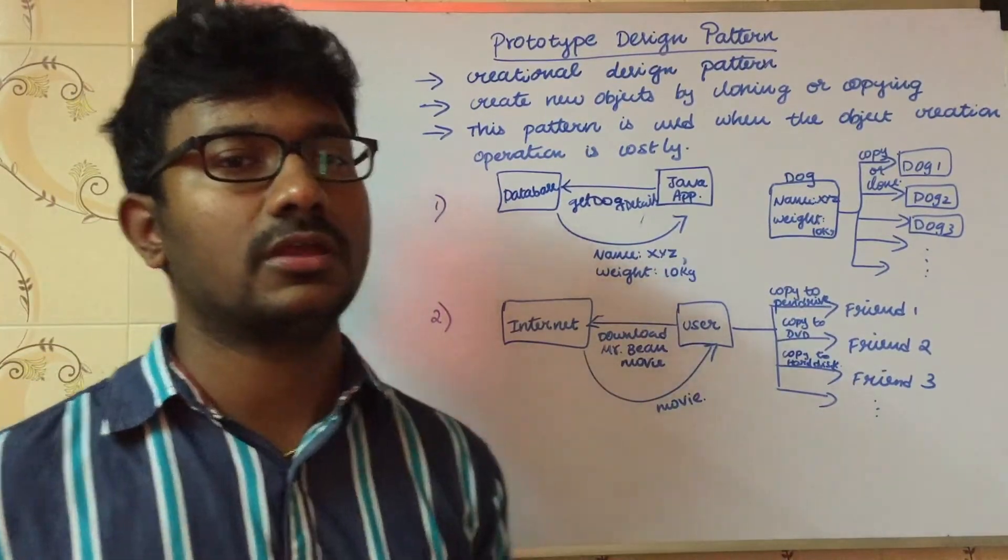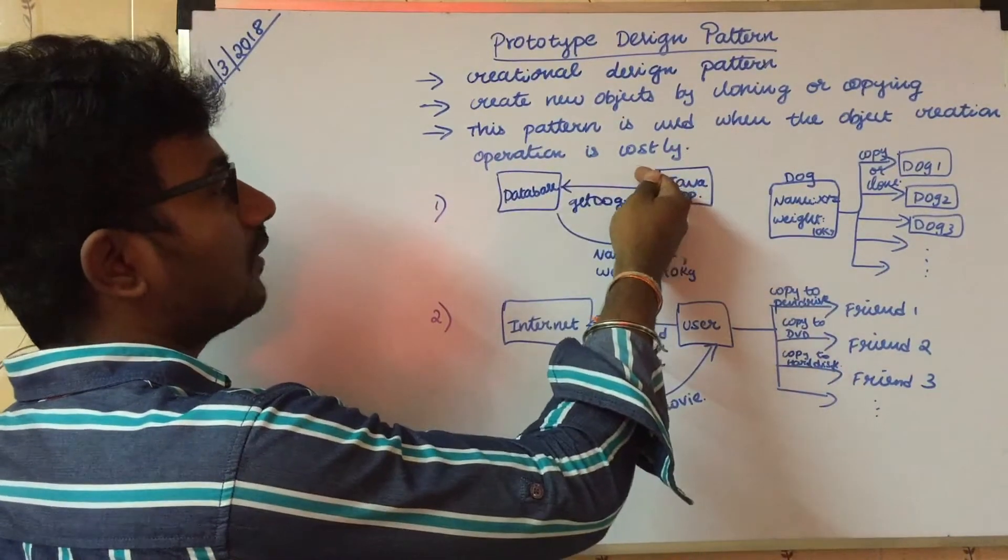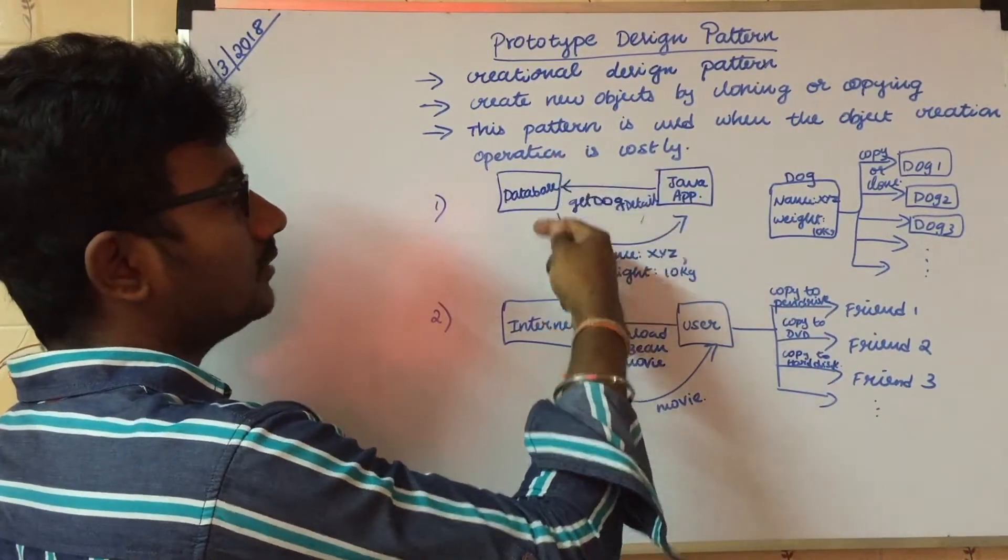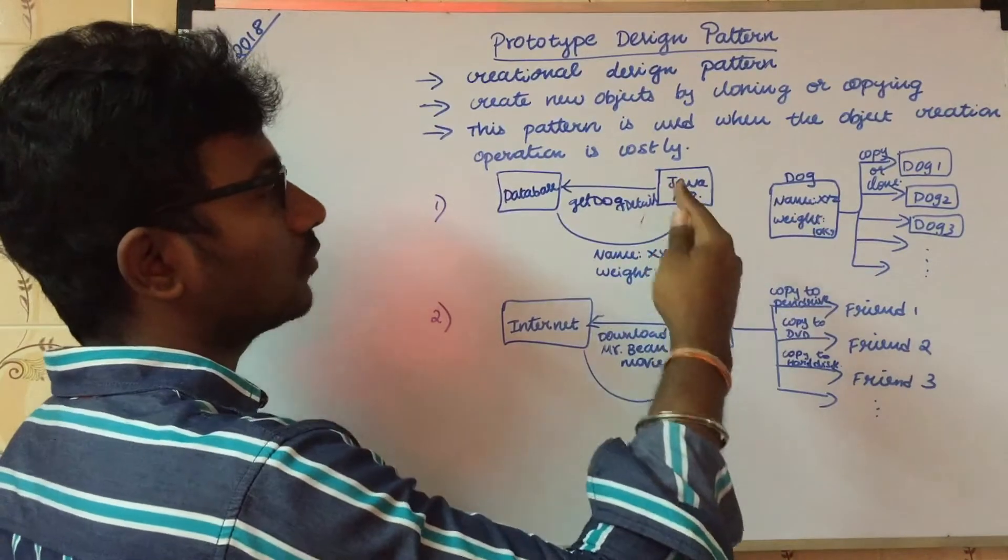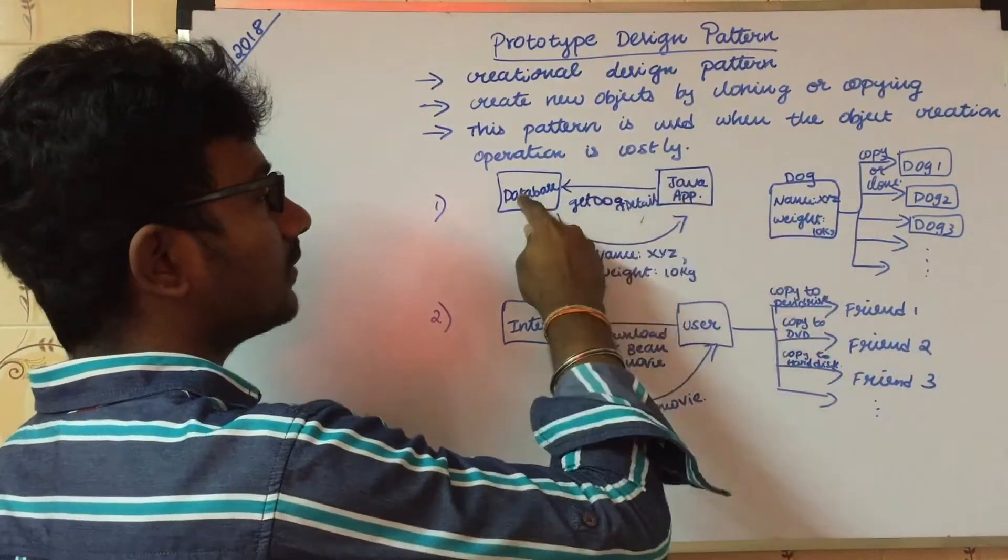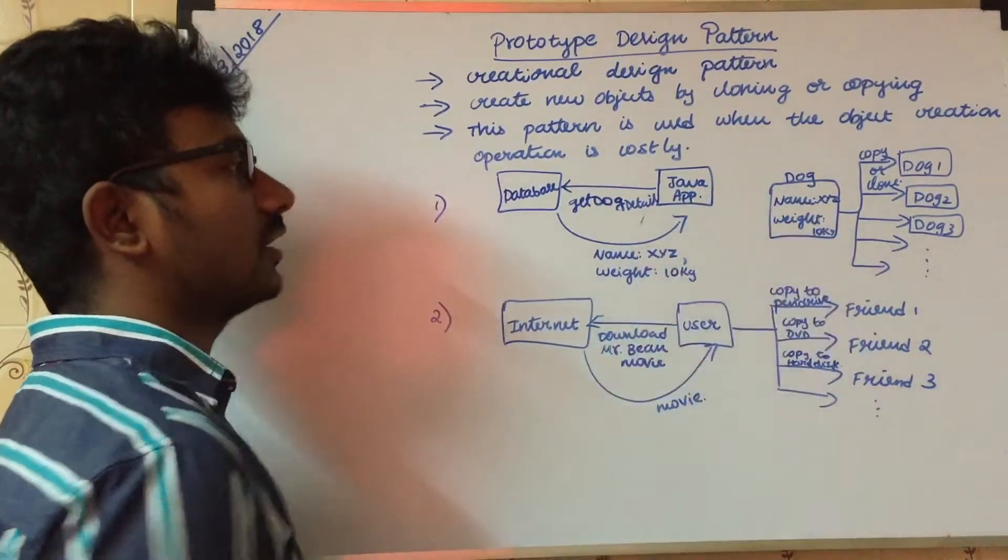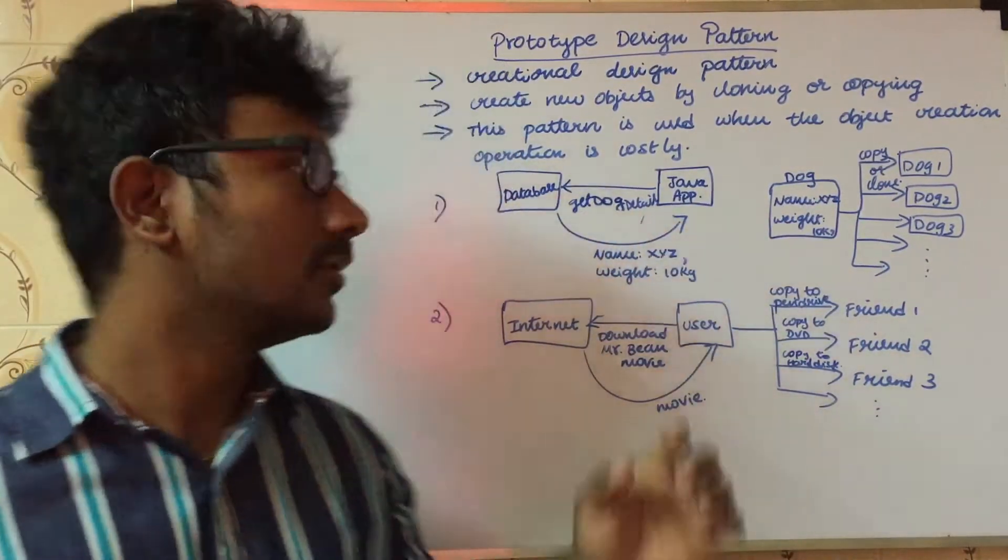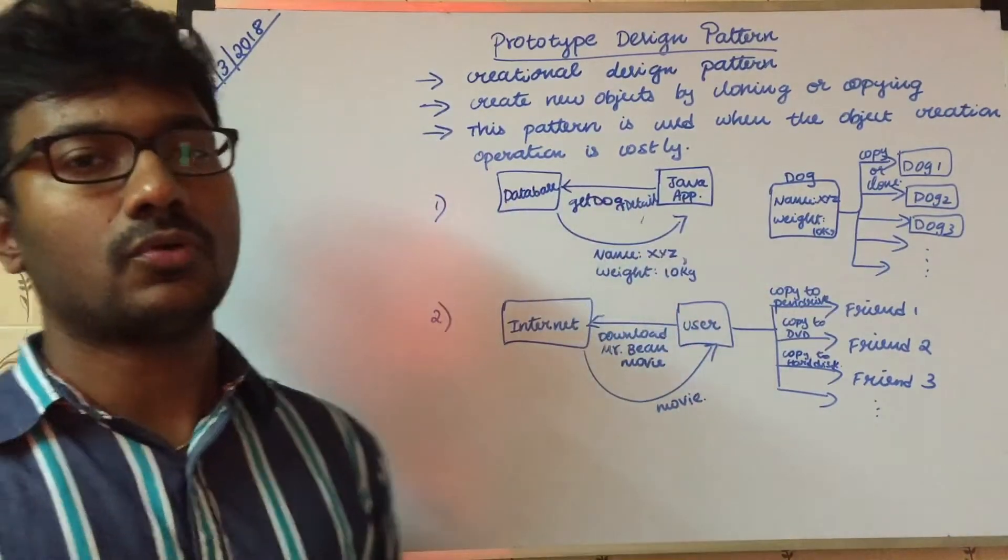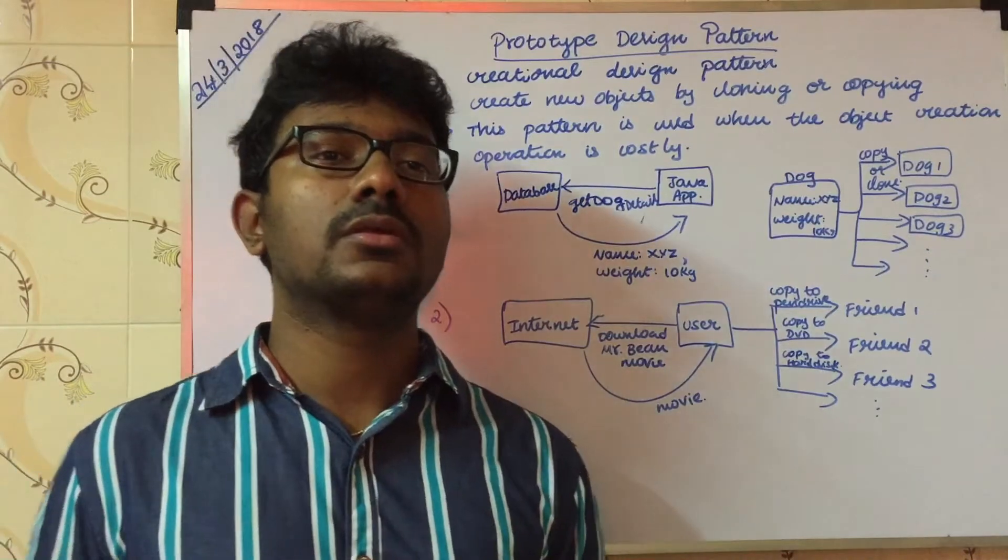You can define the database. There are two ways. There is a Java application, database, and the database name, weight, and age. There is a dog object. There is a Java application with database name, weight, and age. If you use a Java application, you can use any time-consuming operation to get data from the database.